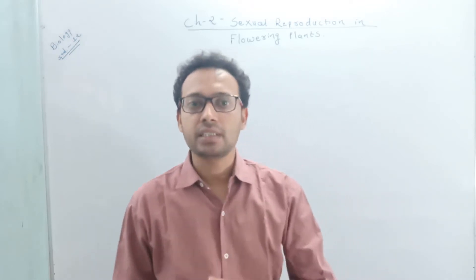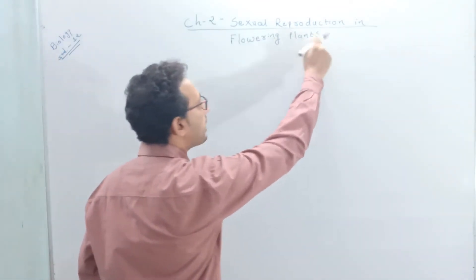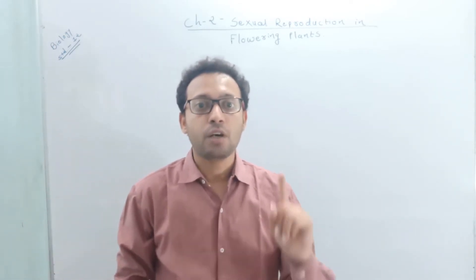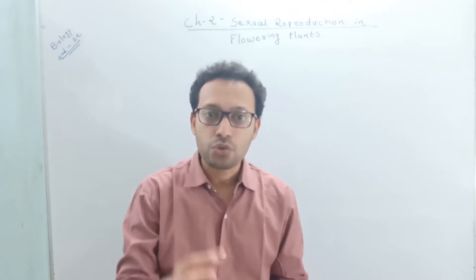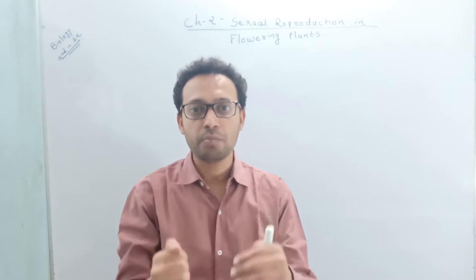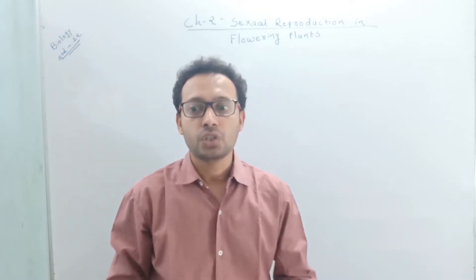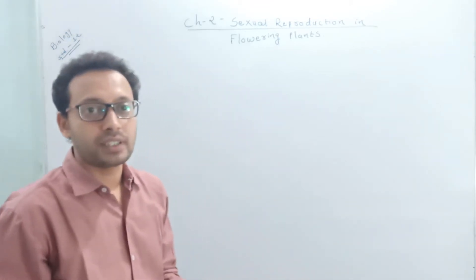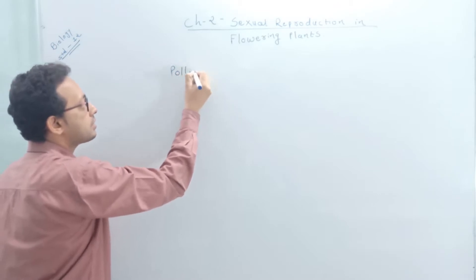In pre-fertilization the second step is gamete transfer, because the ultimate process is the fusion of both gametes — and to fuse they must come together. Usually the male gamete is motile and the female gamete is stationary, but in flowering plants, which are endosporic forms, both male and female gametes are non-motile. So there must be some mechanism to transfer the male gamete to the female gamete. This process is called pollination.